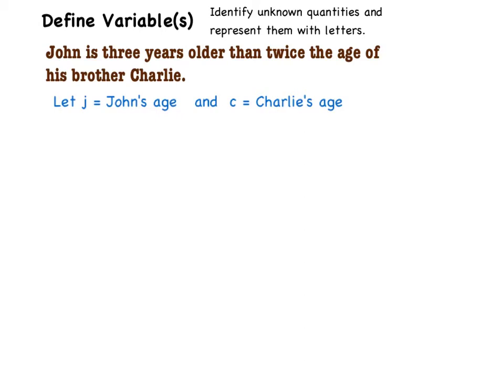So I can look back to the original sentence and see how this relates to those two variables. Some key points here are: John is three years older than twice the age of his brother Charlie.